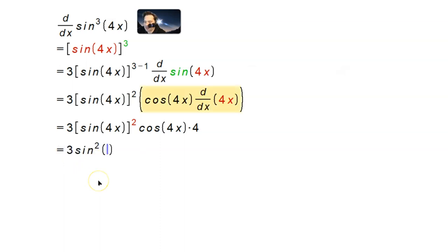Then 3, sin²(4x), cos(4x), and you copy the 4. Lastly, you multiply the coefficients together. So 3 times 4 here is 12. sin²(4x) and then cos(4x).